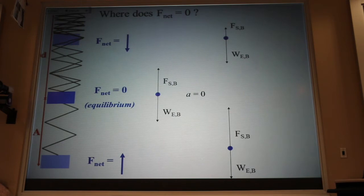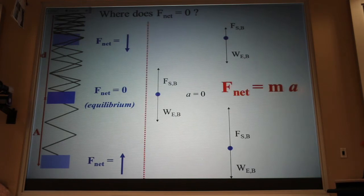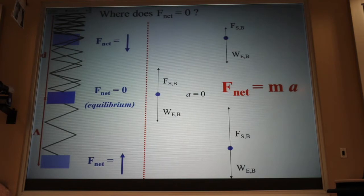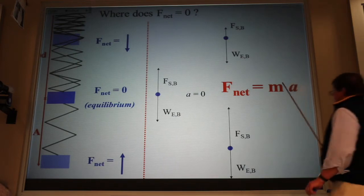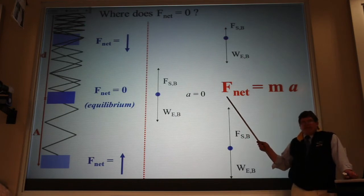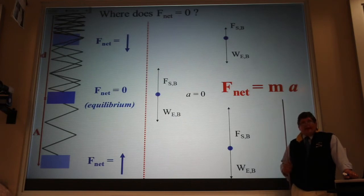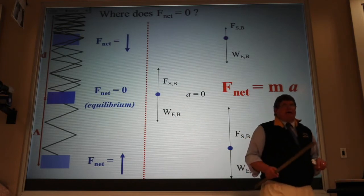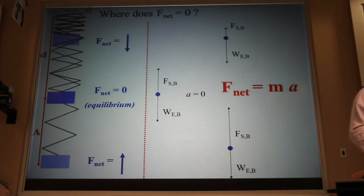I want you to realize that throughout this whole process, we're always just using that F net equals MA, over and over again. It's just complicated by the fact that in this problem, the F net is not just the spring force. In this problem, the weight is not cancelled by the table pushing up.